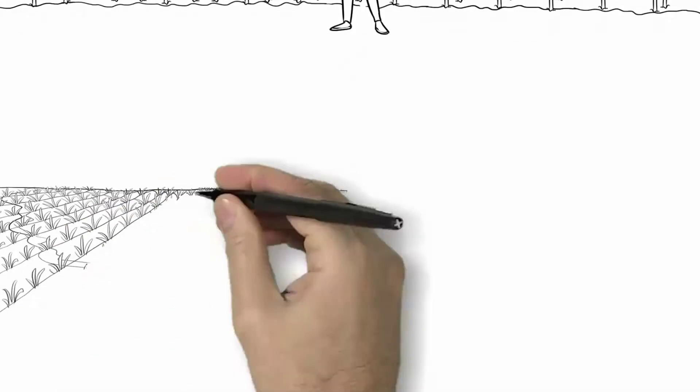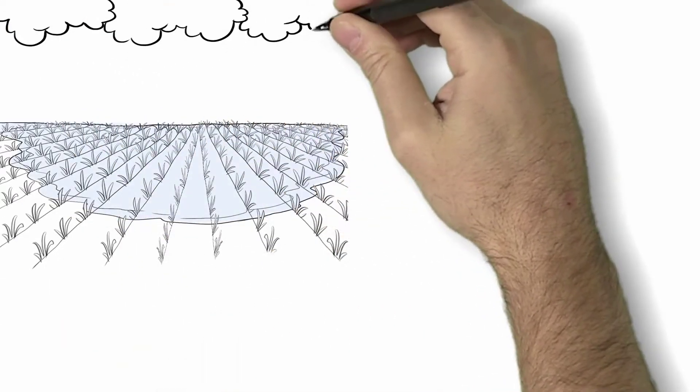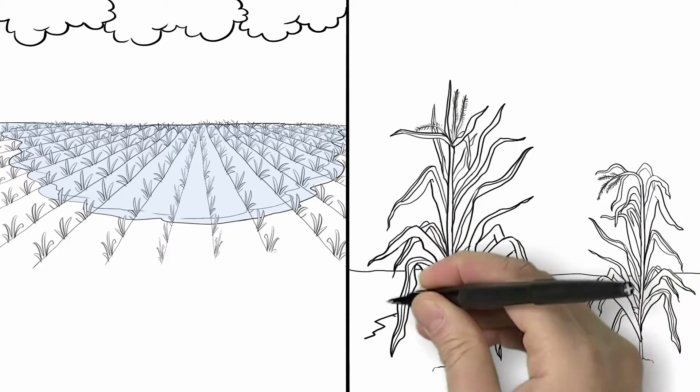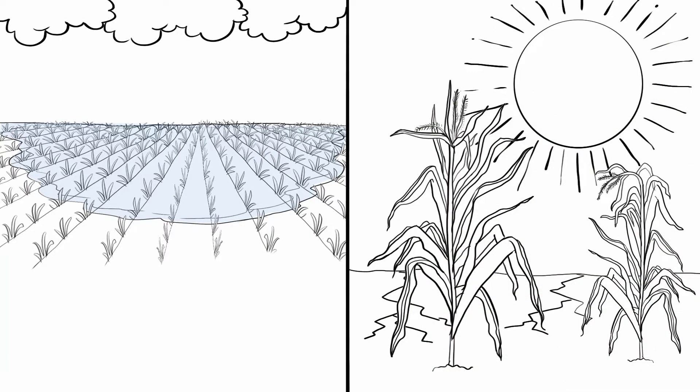But in recent years, he's noticed a change. Again this past season, a particularly wet spring was followed by an especially dry summer. And this pattern appears to be happening more often.